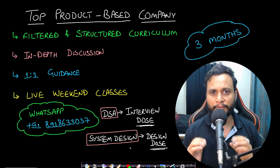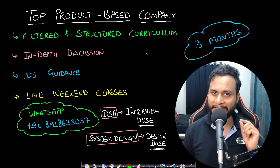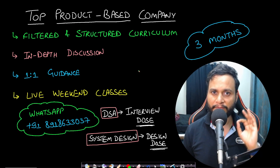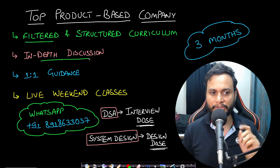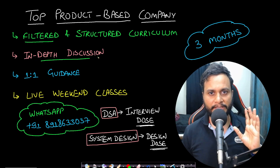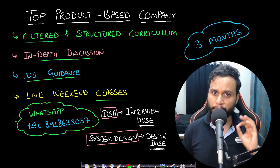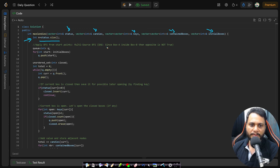If you are looking to prepare for a top product-based company within three months, we have a DSA and system design live interview training program with a filtered structured curriculum, in-depth discussion, one-on-one guidance, and live weekend classes. In this problem we are given status, candies, keys, containedBoxes, and initialBoxes. We find the number of nodes and apply multi-source BFS on this directed acyclic graph.